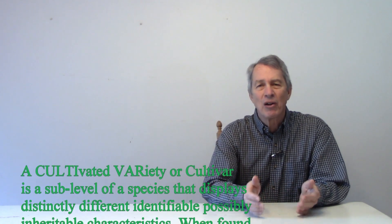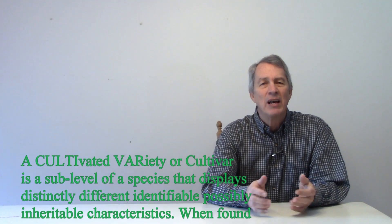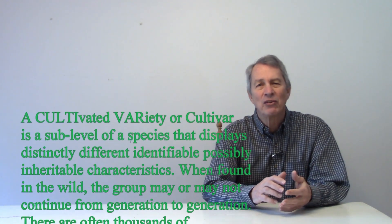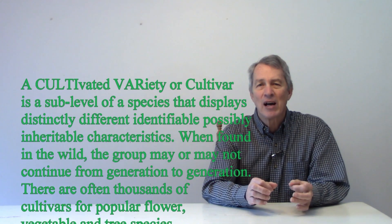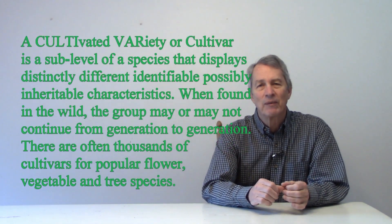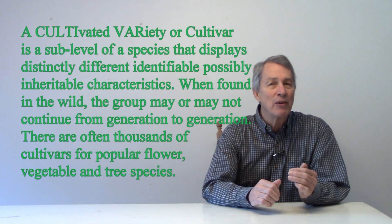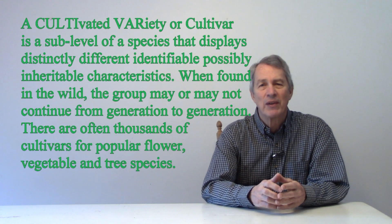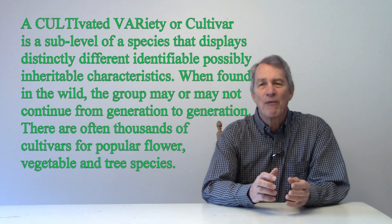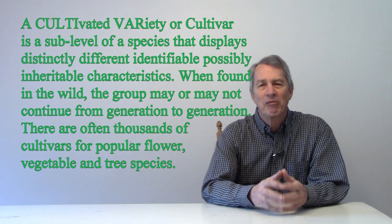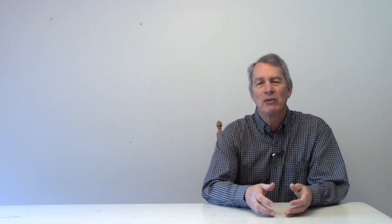A cultivated variety, or cultivar, is a sublevel of a species that displays distinctly different, identifiable, possibly inheritable characteristics. When found in the wild, the group may or may not continue from generation to generation. There are often thousands of cultivars for popular flower, vegetable, and tree species.